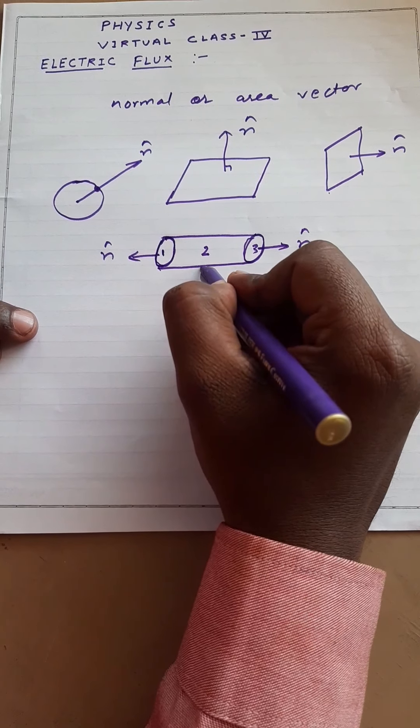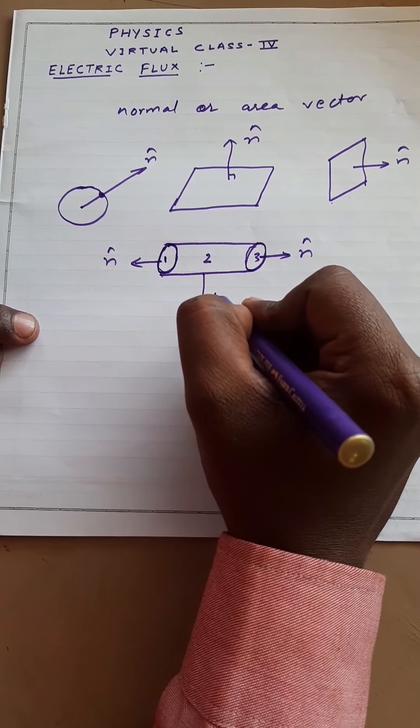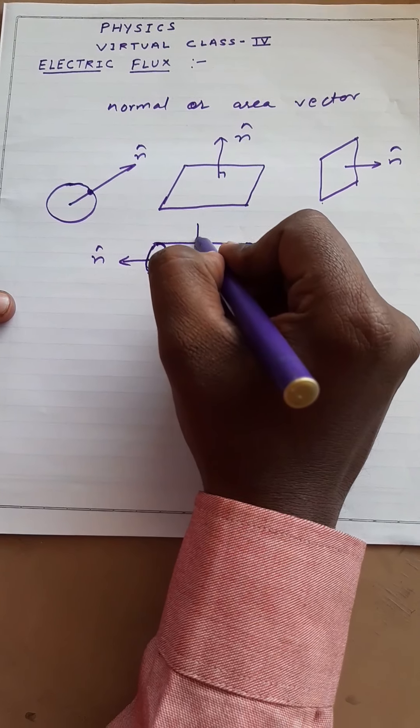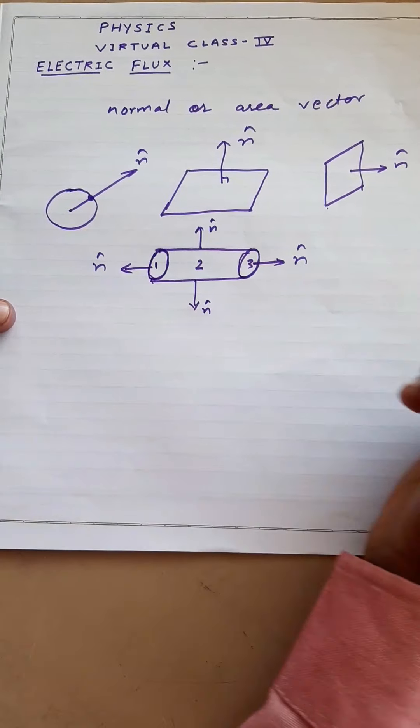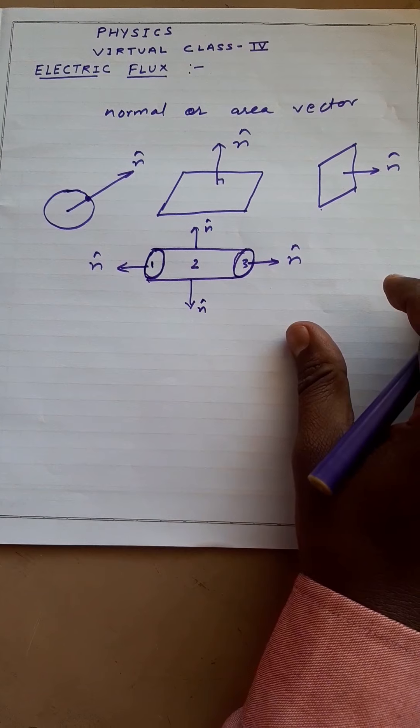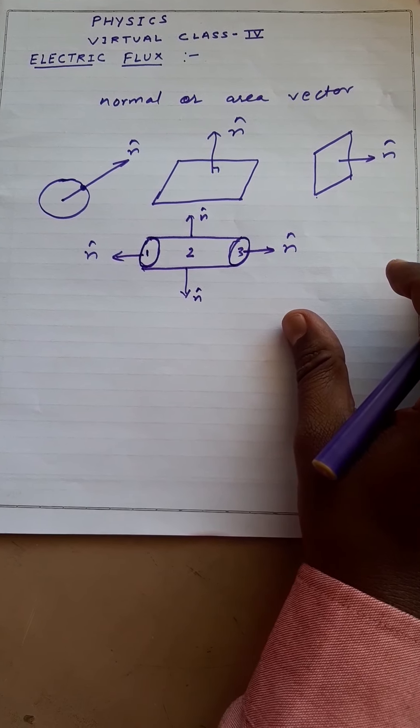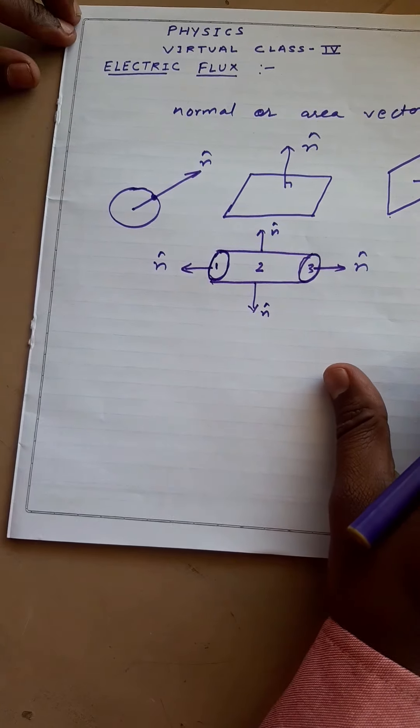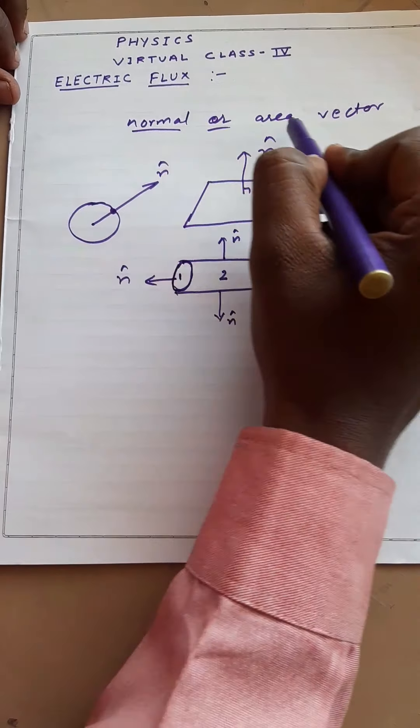And for the curved surface at any point, at this point, area vector or normal vector will be like this. At this point, like this. So these are the possible cases which we are going to study to understand the logic of electric flux.